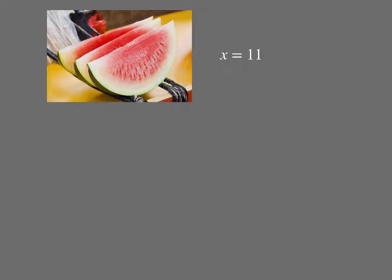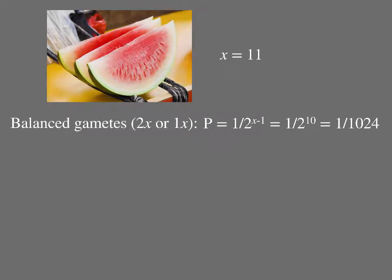For fun, let's think about how likely it is to find a viable seed in a triploid watermelon. The frequency of balanced gametes, and they will be 2x or 1x, is 1 in 1024. Viable seeds will be euploid, meaning that all of their chromosome sets are complete. Euploid zygotes will result from fertilizations that involve 2 balanced gametes, and so the viable seeds can be 4x, 3x, or 2x.